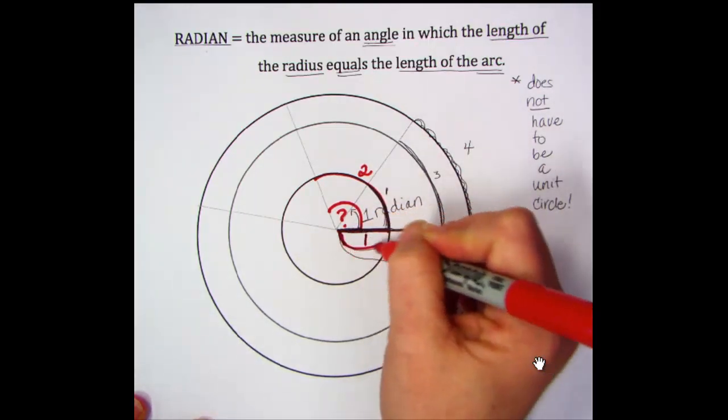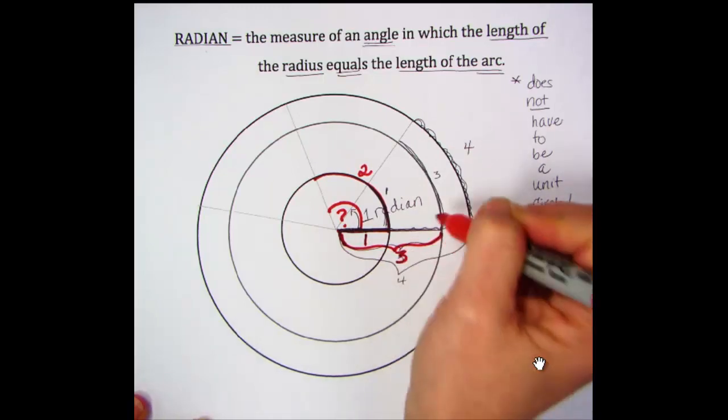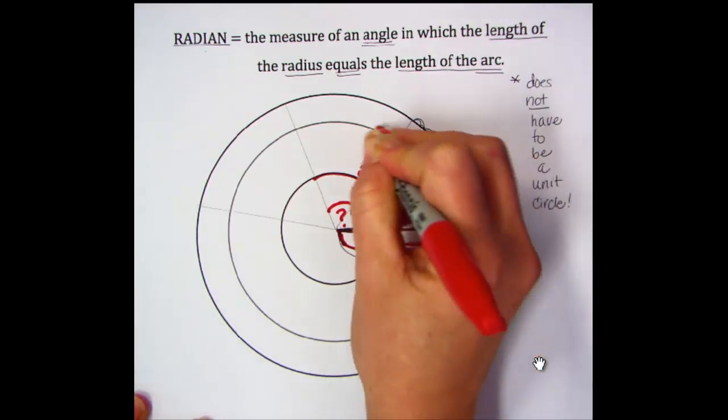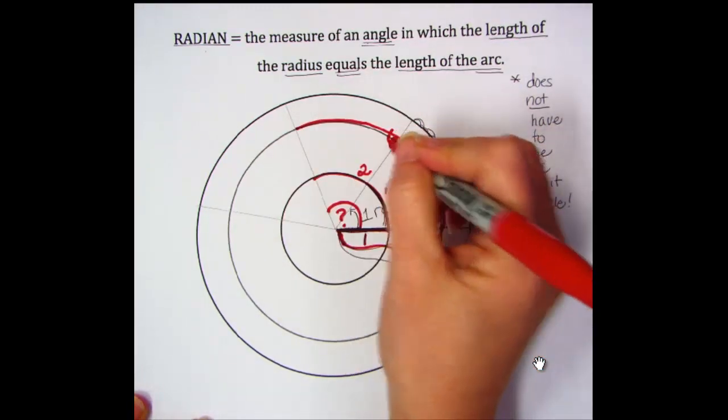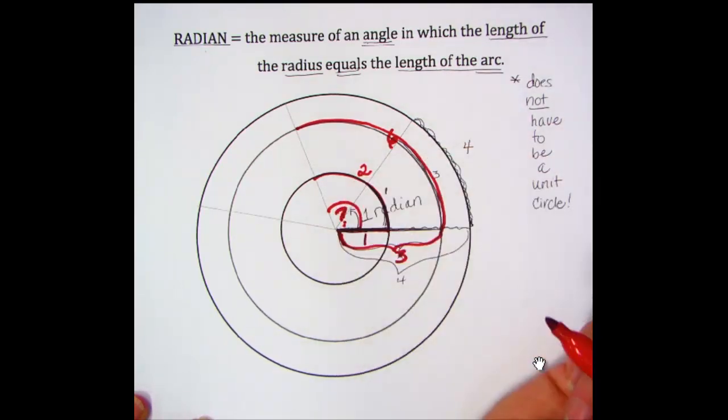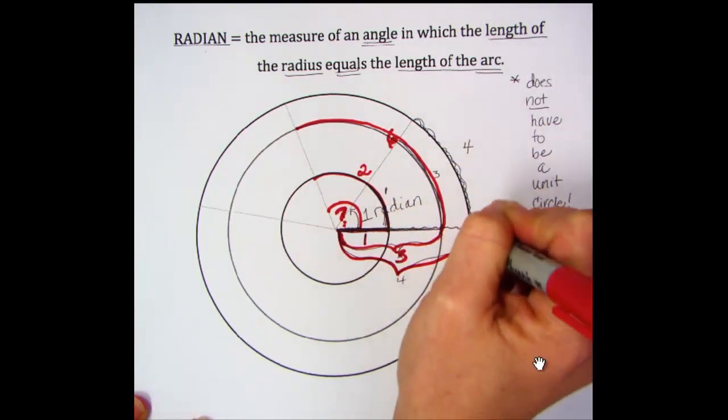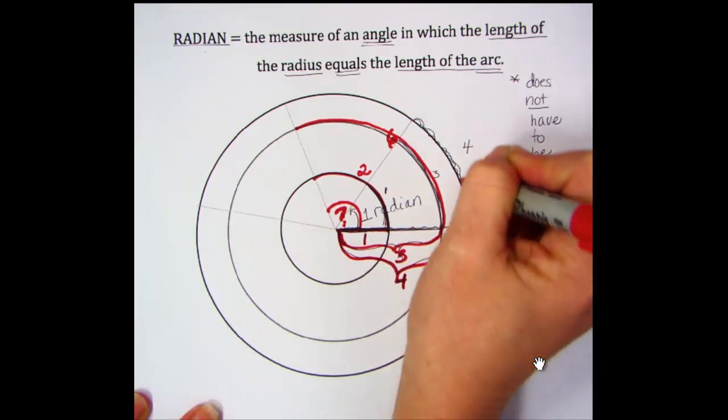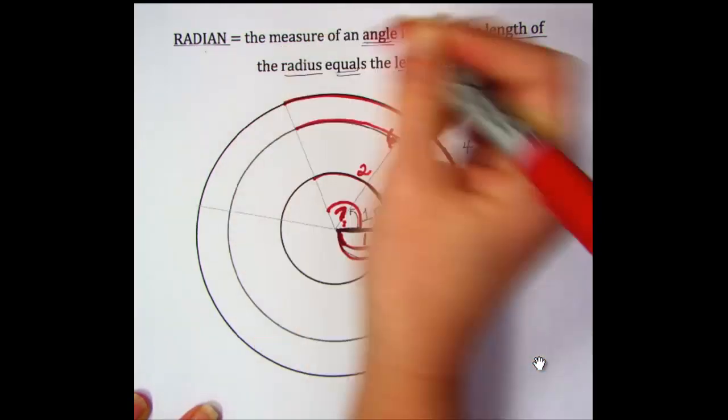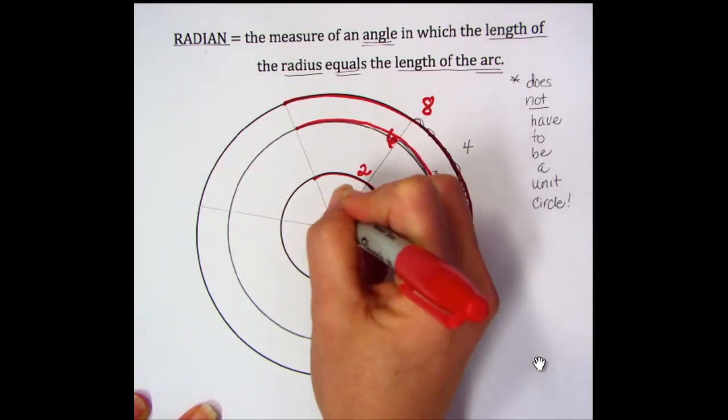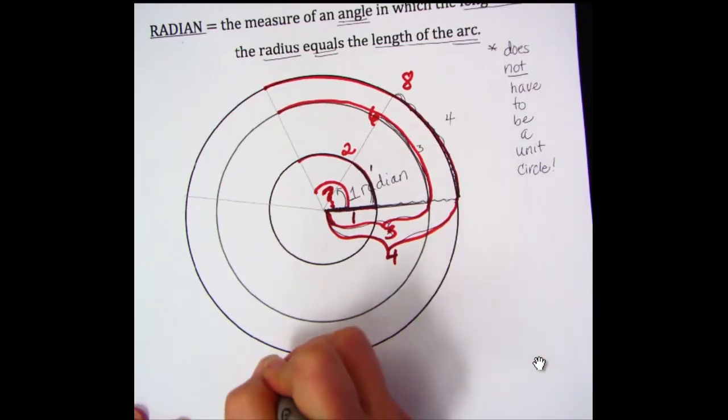Same angle. I have a radius of three and an arc of six, or two sets of three. Same angle. I have a radius of four and an arc of eight, which is two sets of four. So what do you suppose the measure of that angle is in radians?